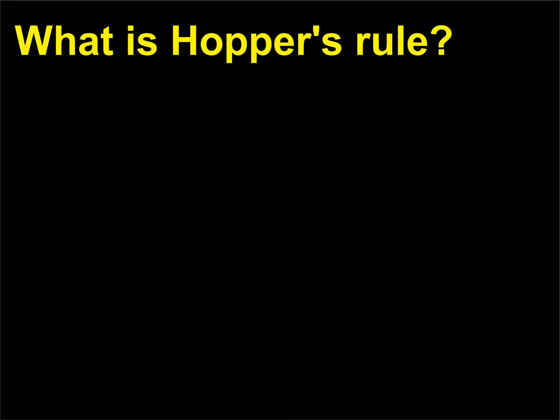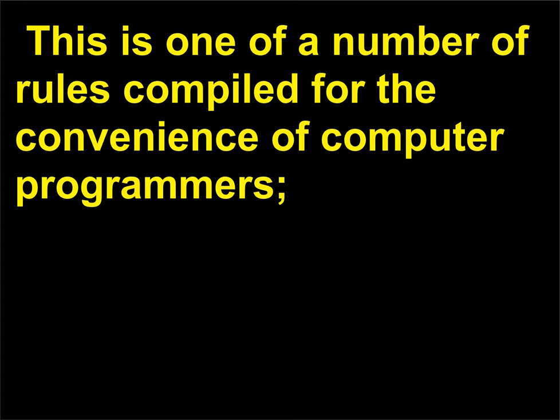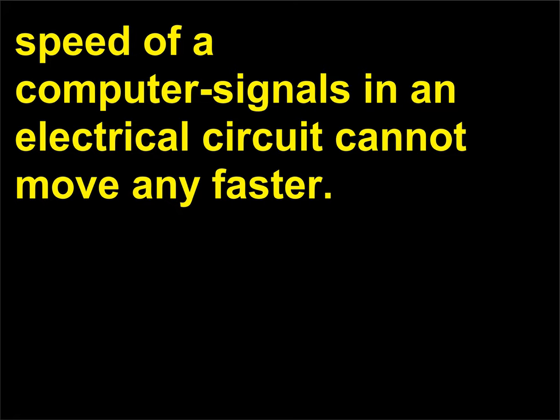What is Hopper's rule? Electricity travels 1 foot (0.3 meter) in a nanosecond, a billionth of a second. This is one of a number of rules compiled for the convenience of computer programmers. It is also considered to be a fundamental limitation on the possible speed of a computer — signals in an electrical circuit cannot move any faster.